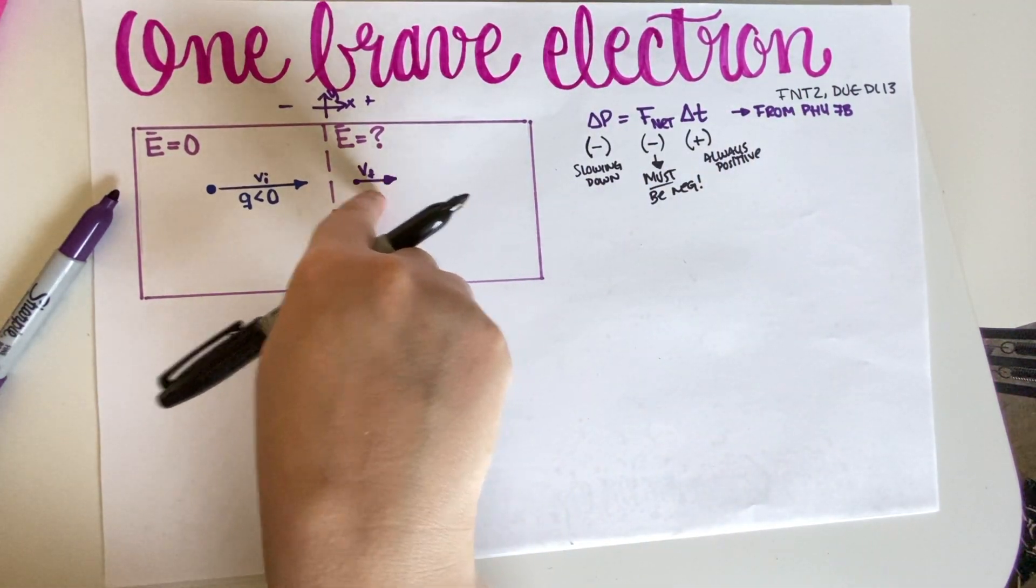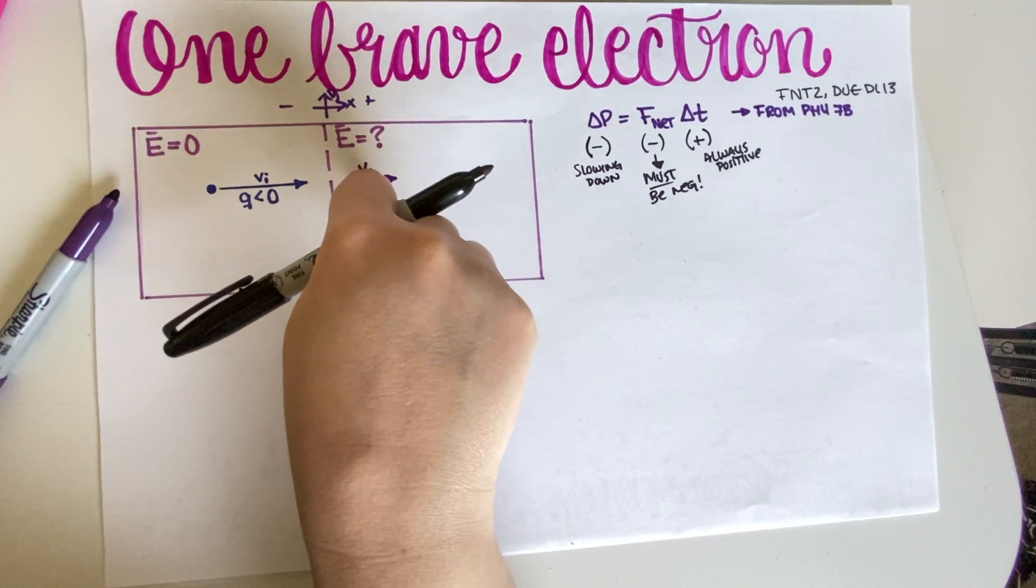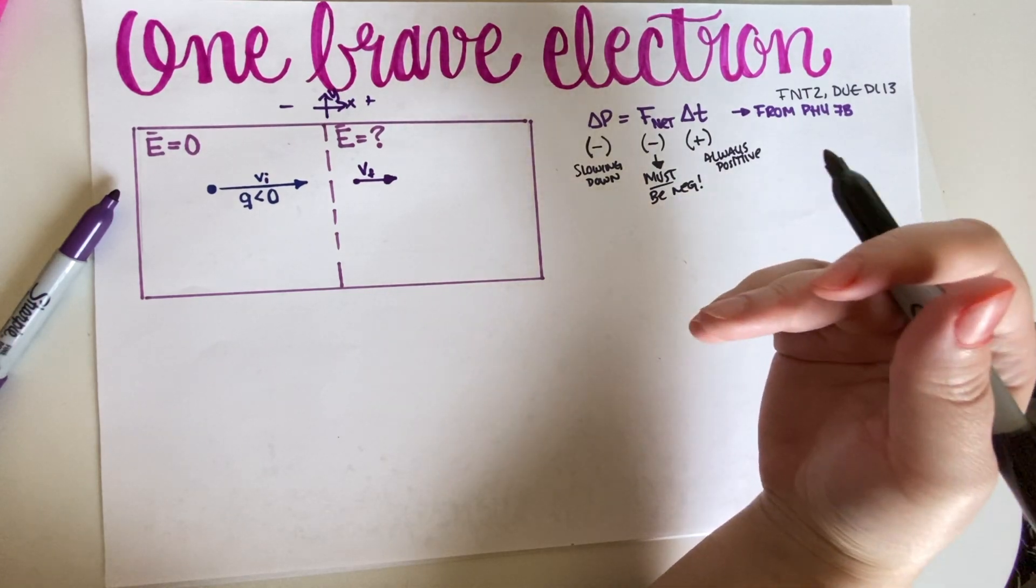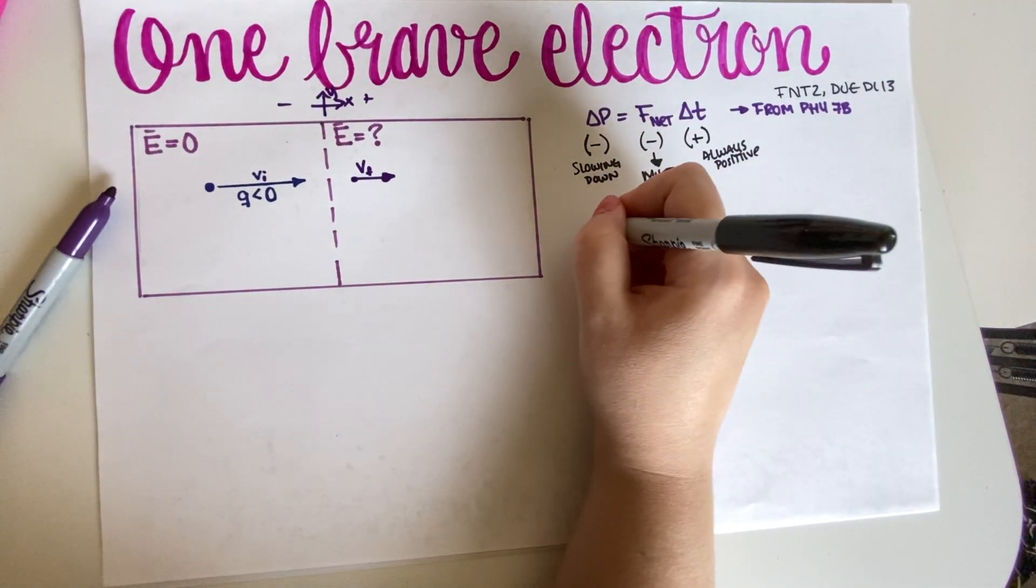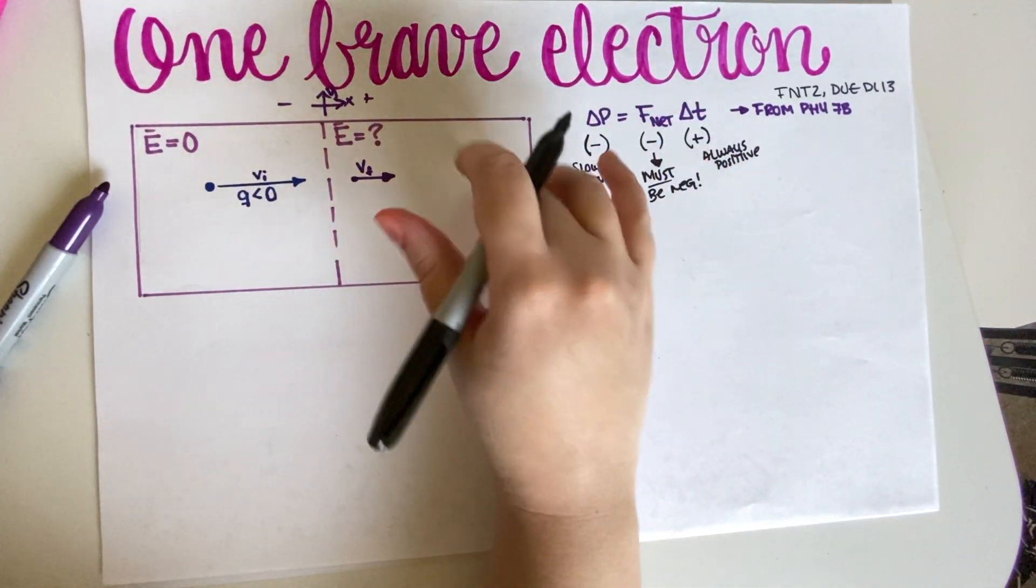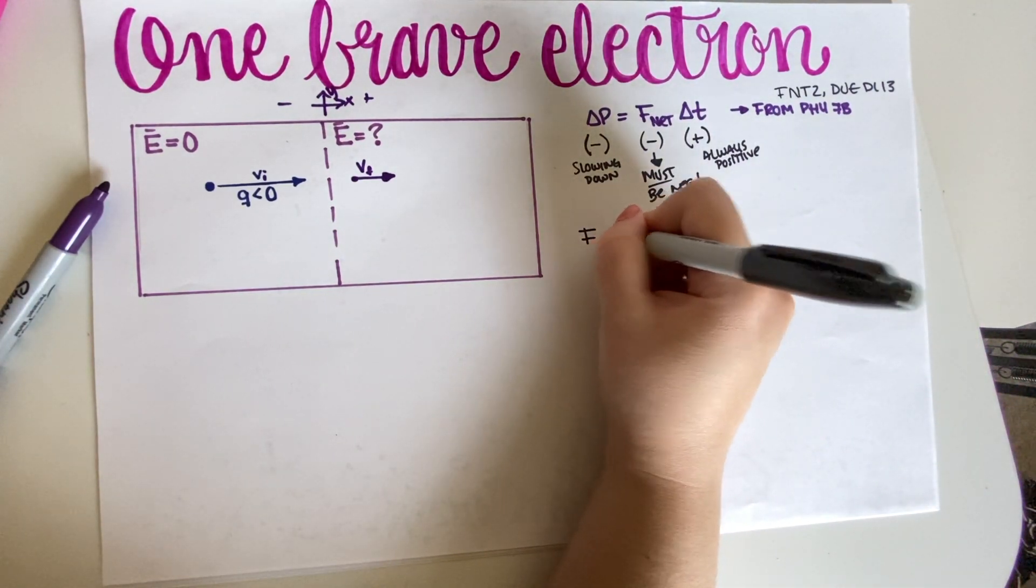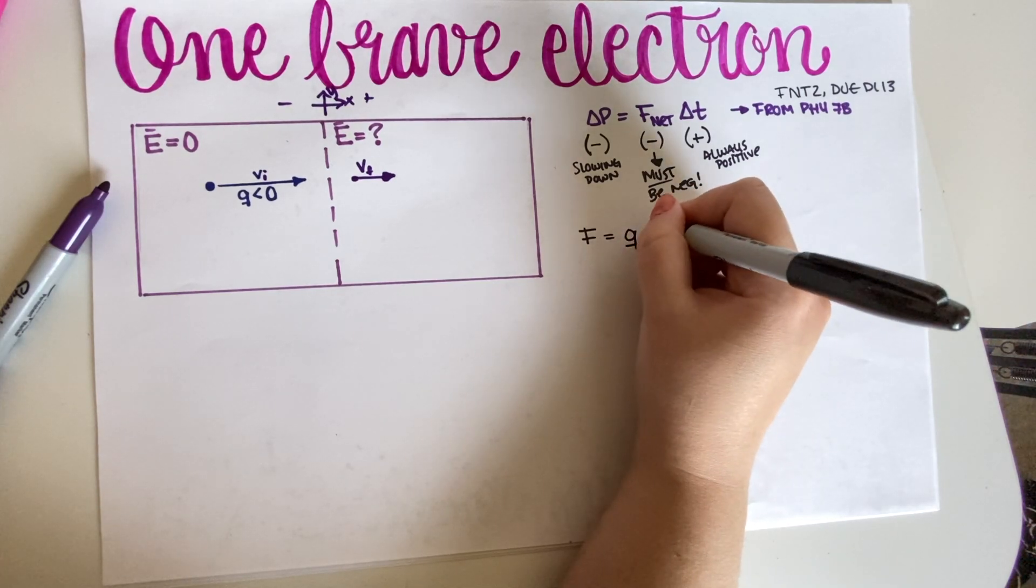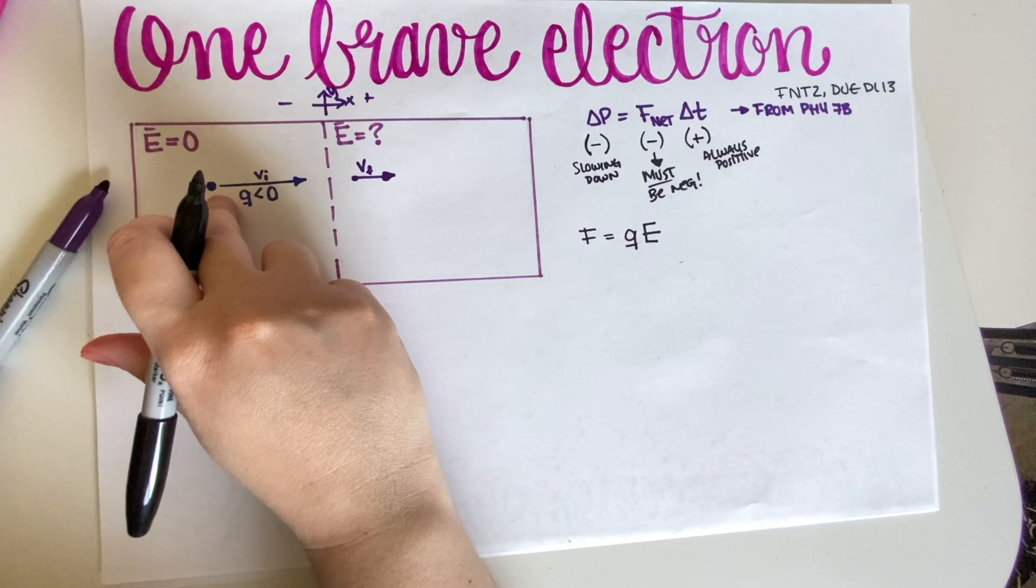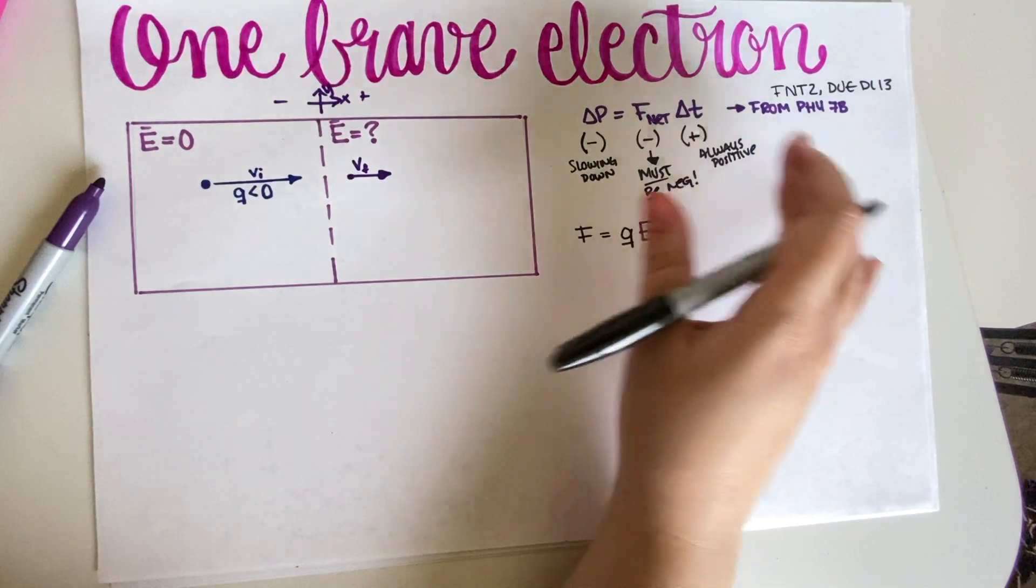So we need a negative force here. If we want this to happen, the force that this particle is experiencing must be negative. Now, going to your equations from physics 7c, we know that F, which is the net force in this case because we're only experiencing one force, is equal to charge times the electric field. Charge being this negative charge, and the electric field being this electric field, which we don't know if it's plus or minus.